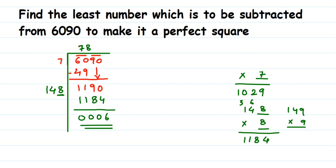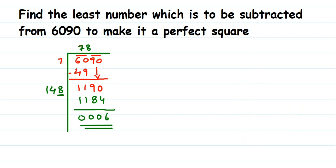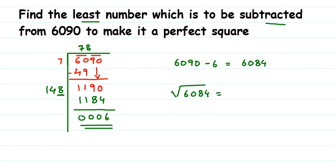So 6090 is not a perfect square, and they're asking us to find the least number to be subtracted. Whatever remainder you get, subtract that from the given number. So 6090 minus 6 gives 6084, and 6084 is a perfect square. We can find the square root of it: the square root of 6084 is 78.